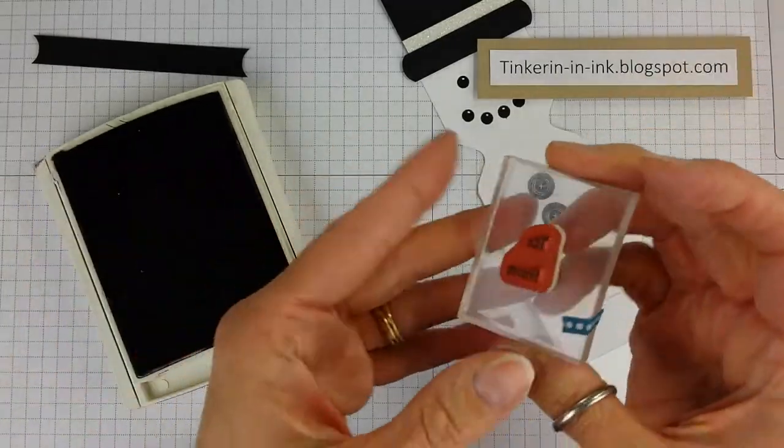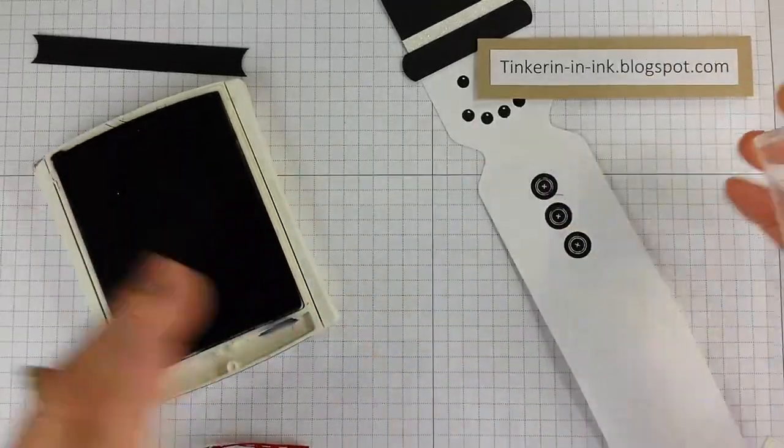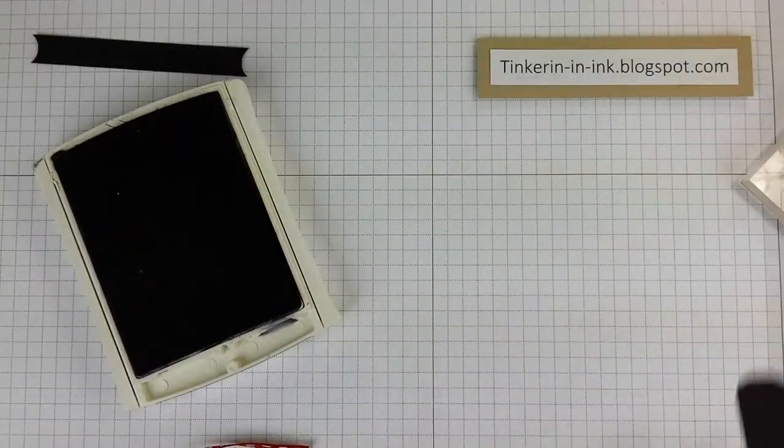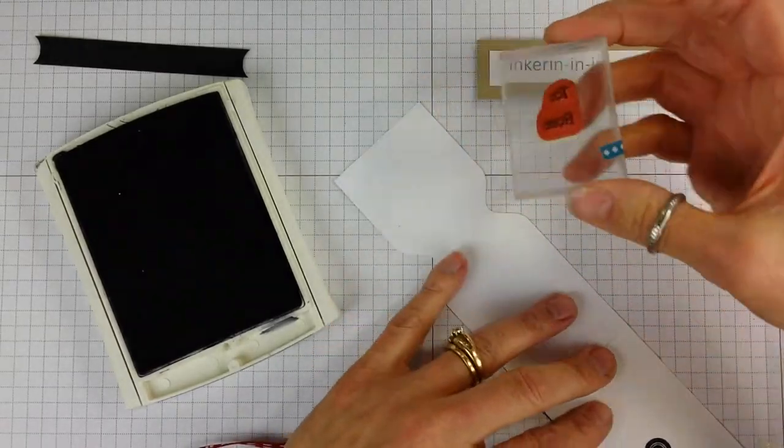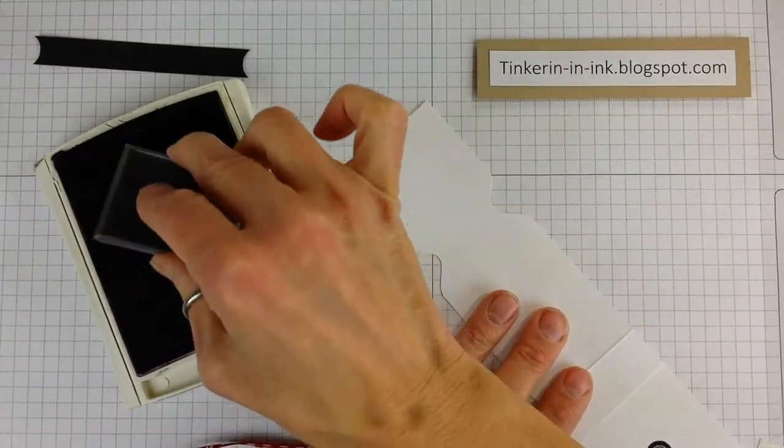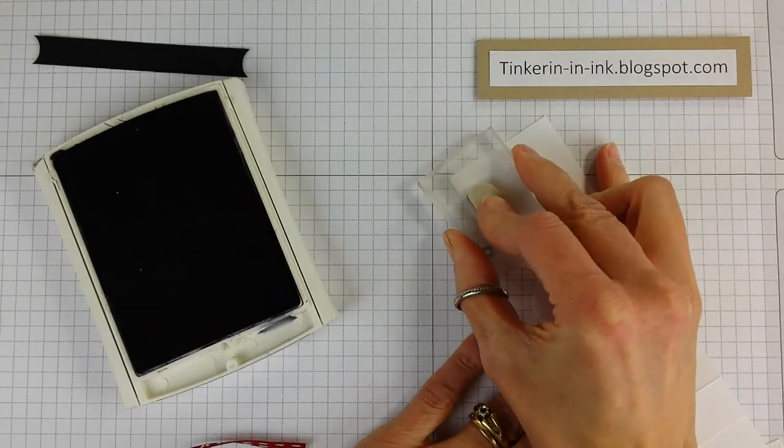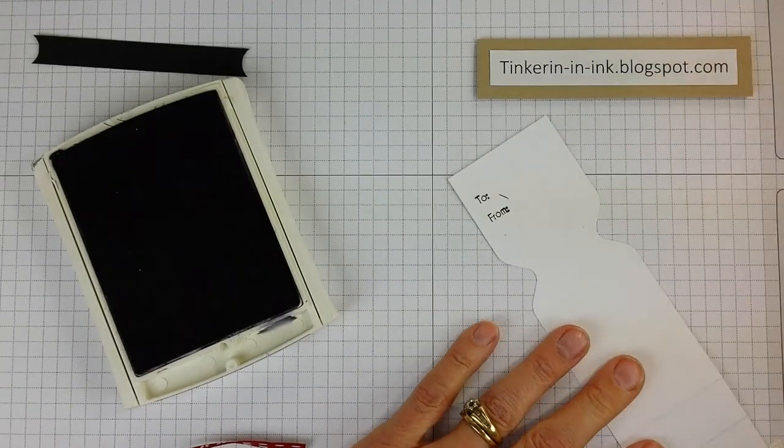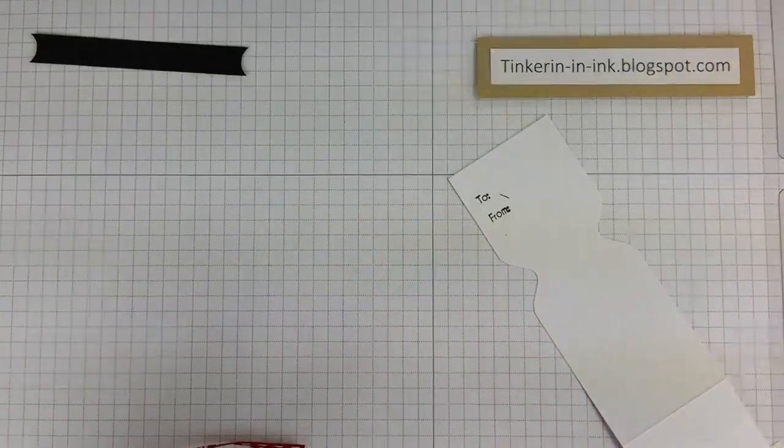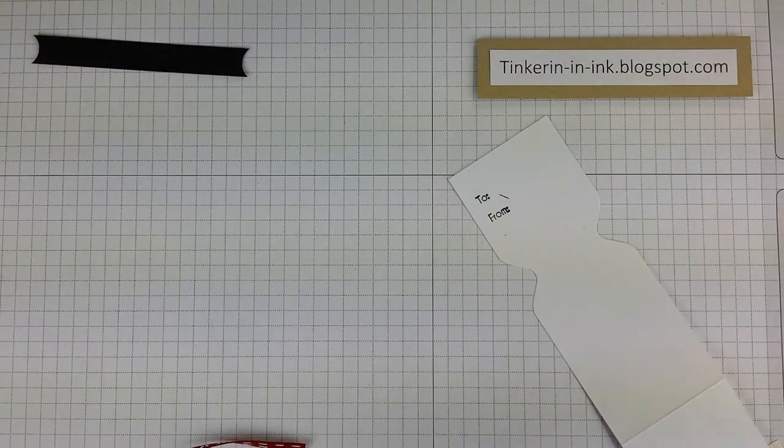Oh, one more stamp. This is the to and from stamp from that same stamp set. It would be nice to be able to write to and from on that, huh? So we're going to put that on the back of his head. Wow, I've got troubles with over stamping right now. What is up?